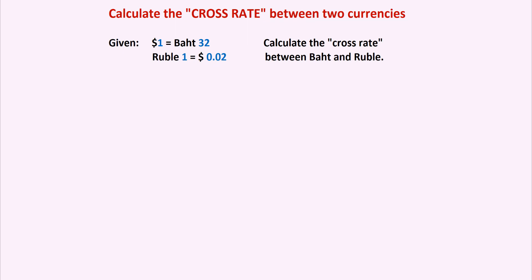And we also have one ruble, which is the currency in Russia, equals two US cents, so 0.02 US dollars. This is the information that's given to us. And we need to use it to calculate the cross rate between the baht and the ruble, which are both foreign currencies.